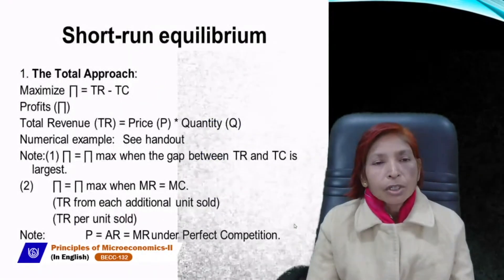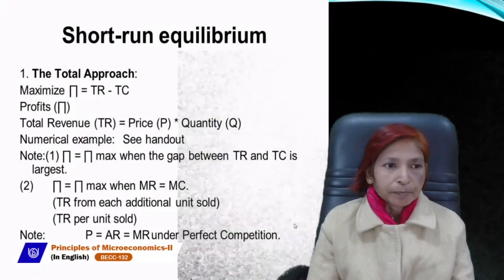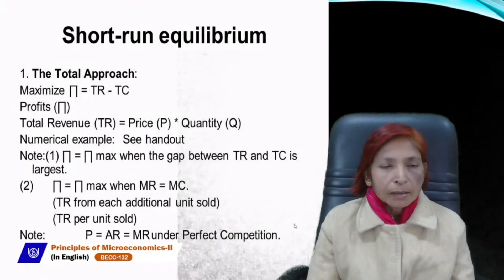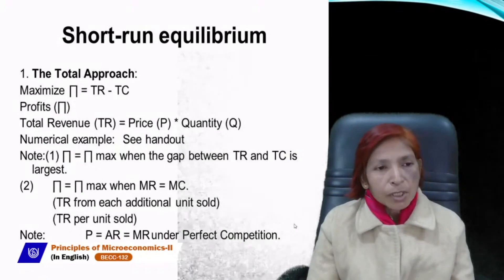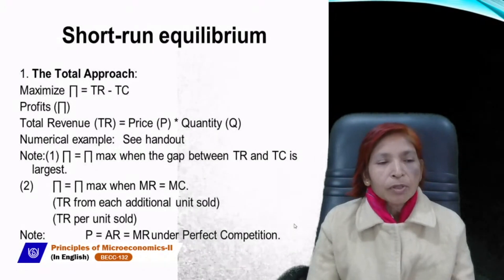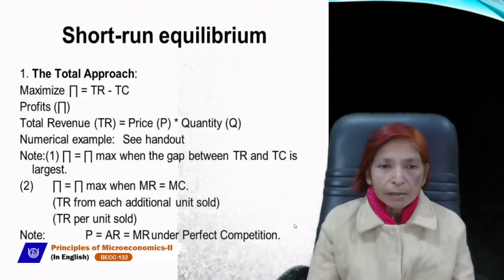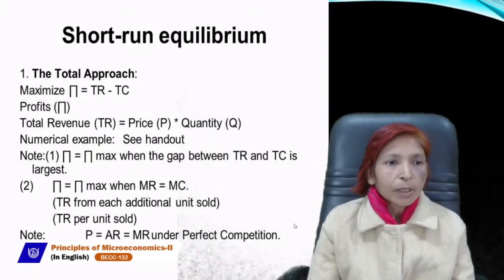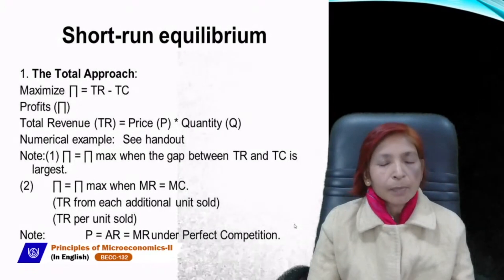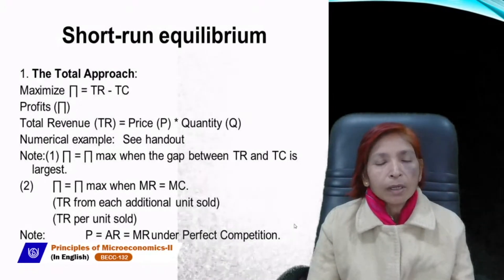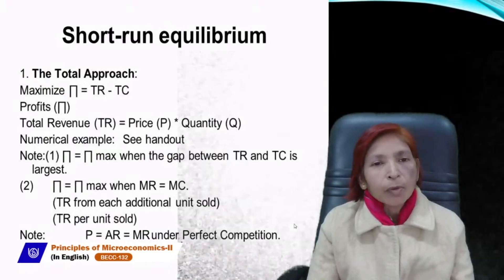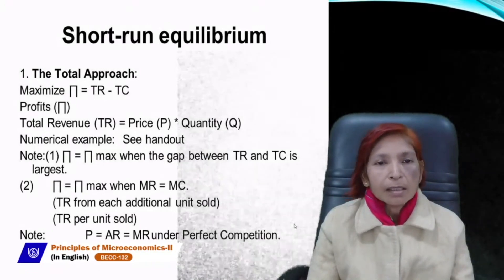Next is short-run equilibrium. Under perfect competition, there are two approaches to equilibrium conditions: the Total Revenue-Total Cost (TR-TC) approach and the Marginal Revenue-Marginal Cost (MR-MC) approach.